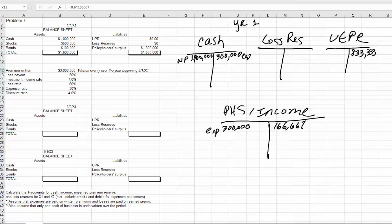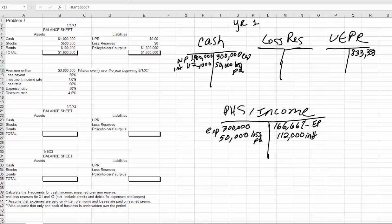Our interest earned was $112,000 — a debit to cash and a credit to income. Now we'll account for our losses. We know that we paid losses of $50,000, so we debit policyholder surplus or income for losses paid as well, because we recognize those as expenses. Our total losses incurred was $100,000. Before the discount rate, we would credit loss reserves for $50,000, but we only have to credit loss reserves for the discounted amount of $48,077. The corresponding entry is also the discounted loss reserve — we only recognize an expense of $48,077.